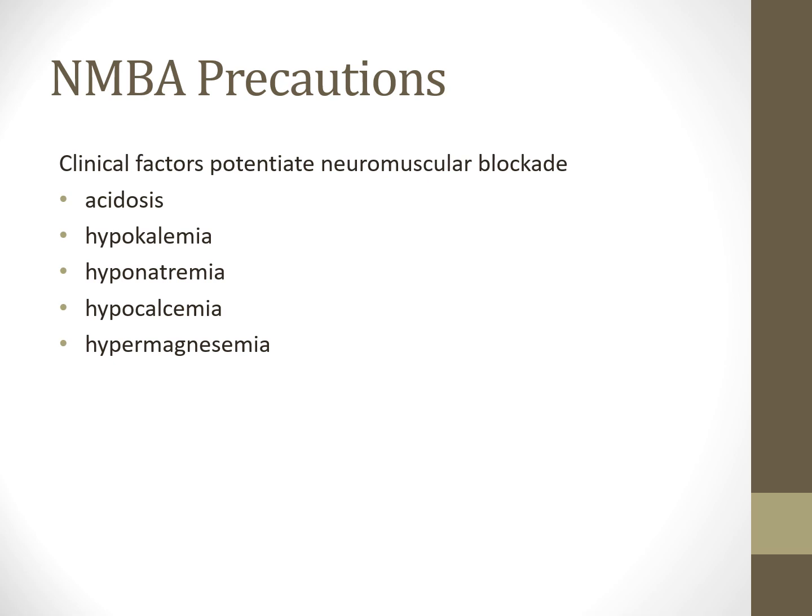Factors that potentiate or augment the effect of neuromuscular blockade include acidosis, hypokalemia, hyponatremia, hypocalcemia, and hypomagnesemia. Alkalosis and hypercalcemia inhibit the effect of the blockade. So acidosis and hypokalemia will increase the effect of the blockade while alkalosis and hypercalcemia will decrease it.